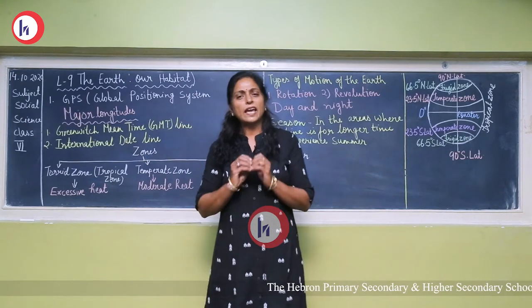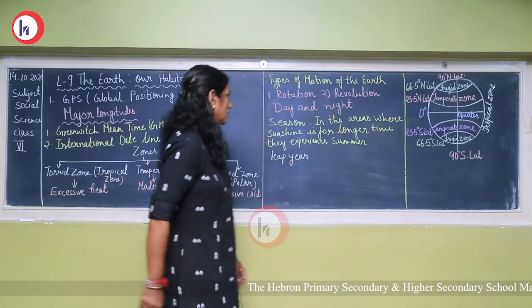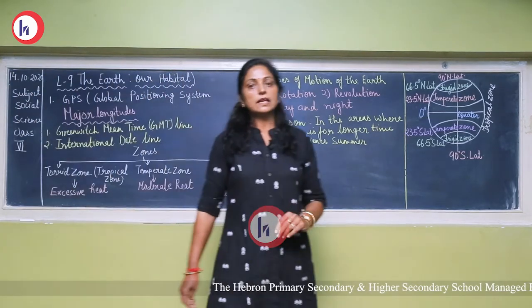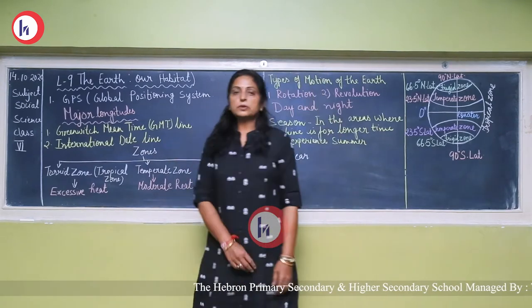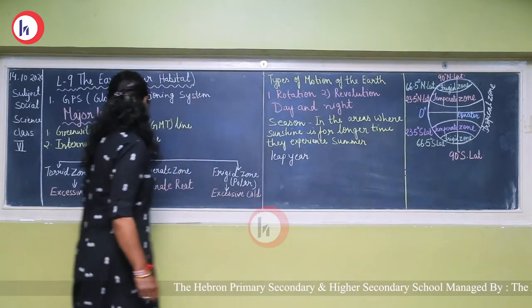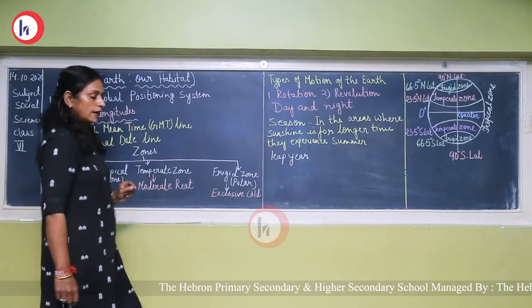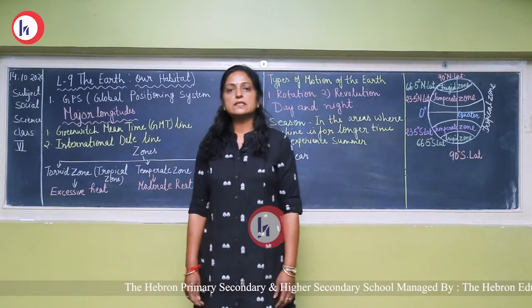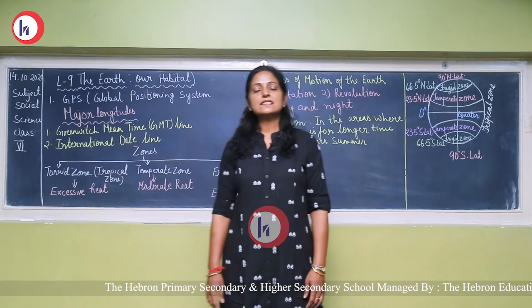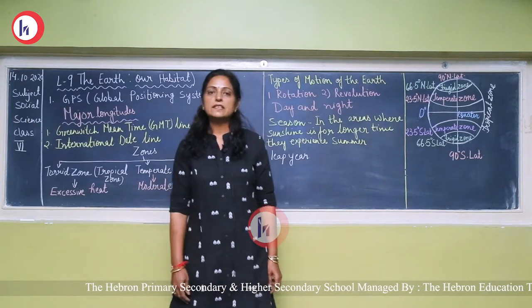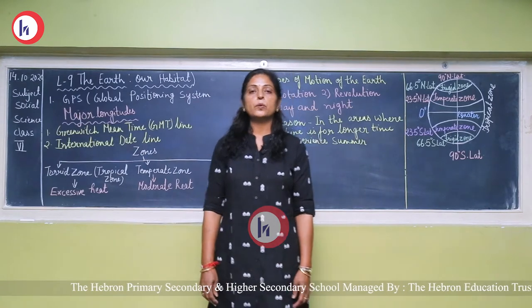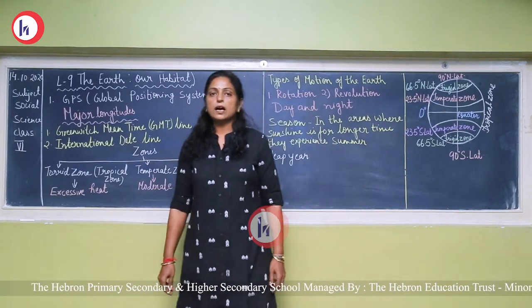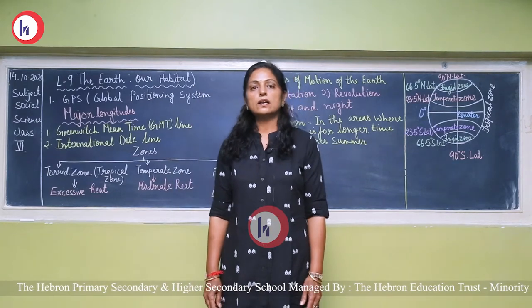If you want to go to any place in the world, you can use GPS. Next topic is major longitudes. Total longitudes are 360, but 0 degree and 180 degree longitudes are important. First is Greenwich Mean Time line — the 0 degree longitude is also called the Prime Meridian, which passes through Greenwich city of England. It divides the earth into two halves: the Eastern Hemisphere and the Western Hemisphere. The longitude up to 180 degrees east is the Eastern Hemisphere, and up to 180 degrees west is the Western Hemisphere.